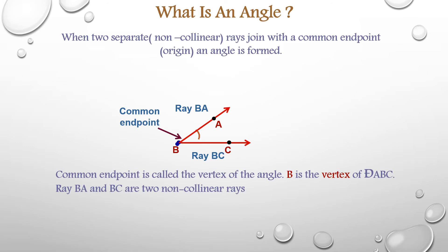Ray BA, ray BC. These are the arms of angle ABC. And B is the common endpoint which is also known as vertex.